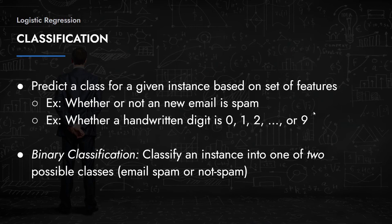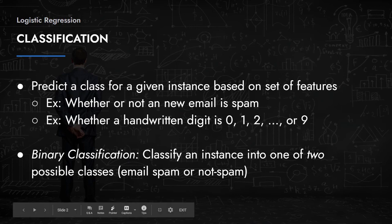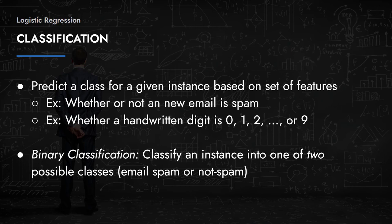Primarily we're concerned with binary classification, where you classify an instance into one of two possible classes — for example, spam or not spam. Binary classification helps you solve most classification problems, and once you understand it, scaling up to multi-class classification isn't too difficult, though it's not always directly applicable.